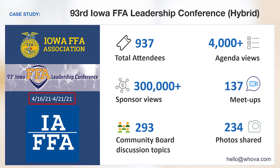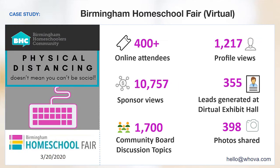Another conference, the 93rd Iowa FFA Leadership Conference, had a total of 937 attendees, both in-person and remote, that had 137 both in-person and online meetups and shared 234 photos. They also gave great benefits to their sponsors and generated over 300,000 sponsor views. The Birmingham Homeschool Fair made their sponsors and exhibitors extremely happy. The sponsor banners were viewed more than 10,000 times, and their exhibitors generated 355 leads through Whova's Digital Exhibit Hall.